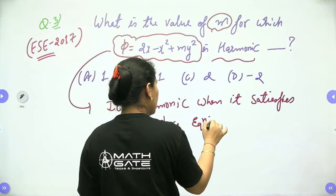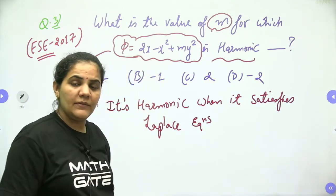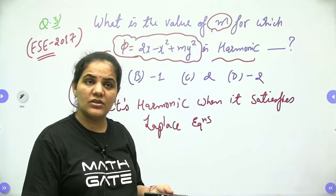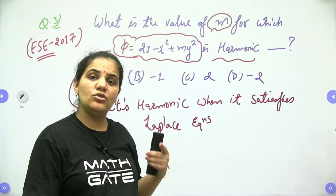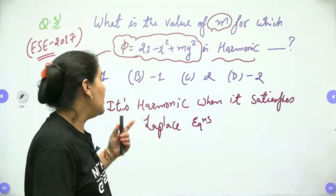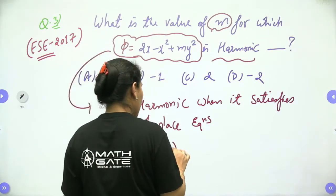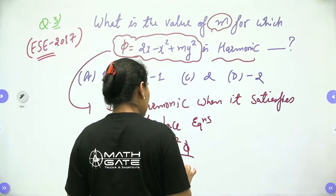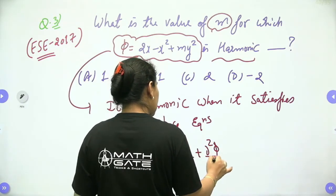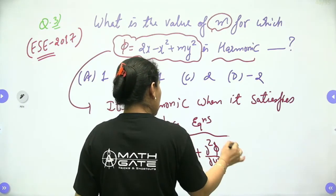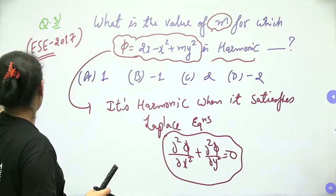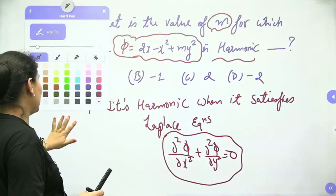The Laplace equation states that ∂²φ/∂x² plus ∂²φ/∂y² equals 0. So we need to find the second-order partial derivatives of φ.